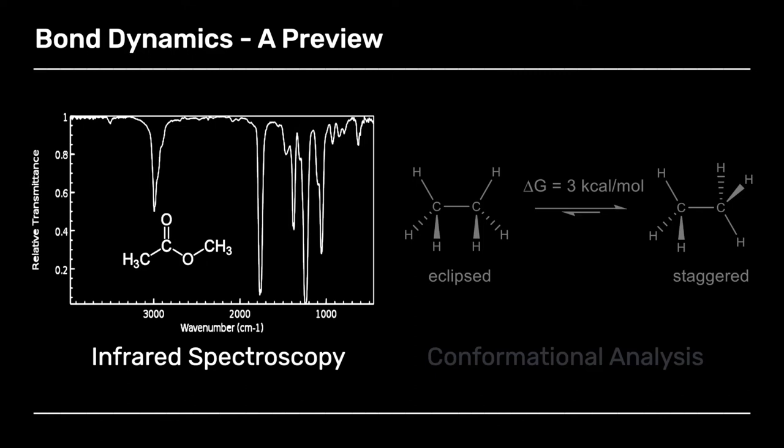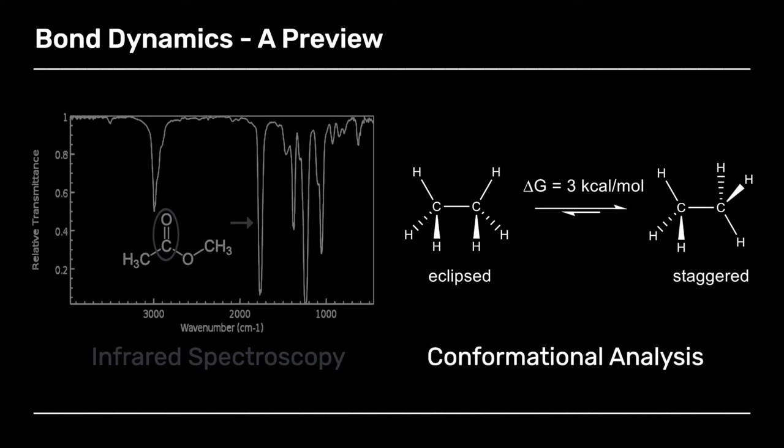And what you can do is certain bonds vibrate at specific frequencies in the infrared spectrum. So you can measure their infrared absorption and make a diagnosis. This is a technique that's used in forensic science, for example. So this bond, this carbon-oxygen double bond, because it vibrates, that can be detected in the infrared spectrum by that peak that I pointed to. Another topic is conformational analysis based on bond rotations.